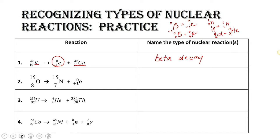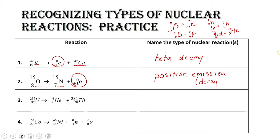Taking a look at number two, we've got oxygen-15 that is converted to nitrogen-15, and we have another particle. How do you know you have a particle? Most times it doesn't have an actual symbol from your periodic table — it looks like something else, it's an E or an N or something like that. We've got this particle with a positive one charge, and it looks something like an electron. It's not an electron — it is actually a positron. So this is positron emission, which is just another fancy word for decay.